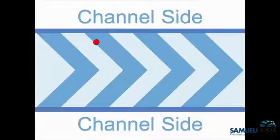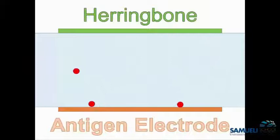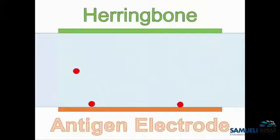To summarize, integrating a herringbone structure into our original channel will allow antibodies to travel closer to the electrodes, increase their contact area, and increase the chance of them binding to the electrodes. Here is another schematic of helical flow generated by the herringbone structure.